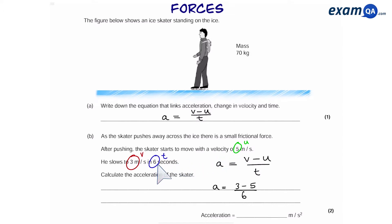So we can put this into our equation and we get 3 minus 5 over 6, which is minus 0.33 meters per second squared. Now the fact that we have a negative acceleration means he's slowing down, which is correct because the question says he slows down.